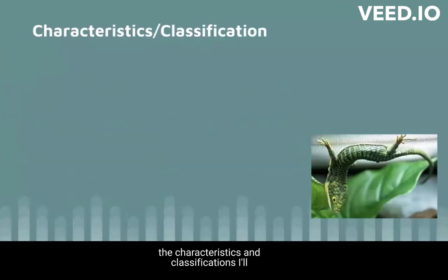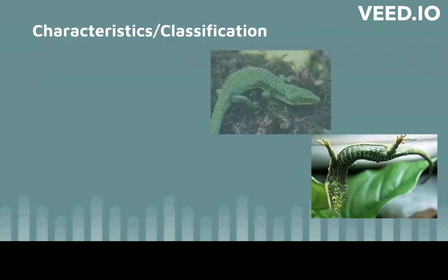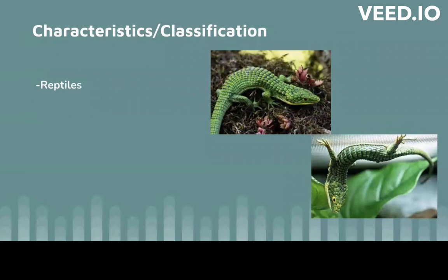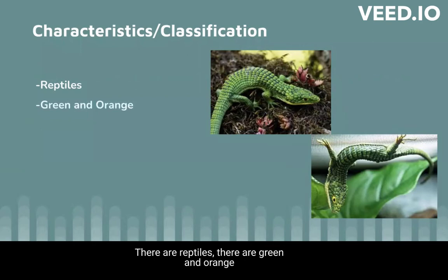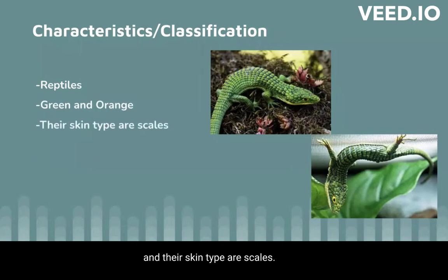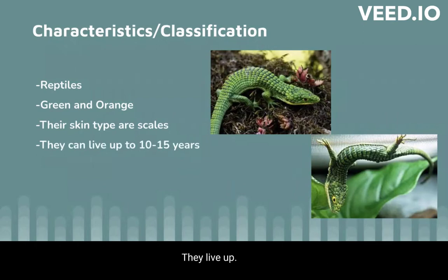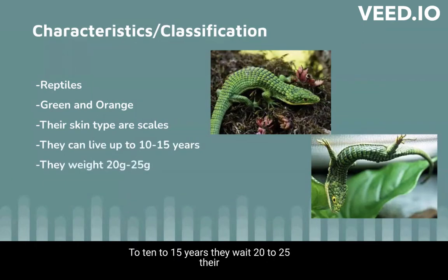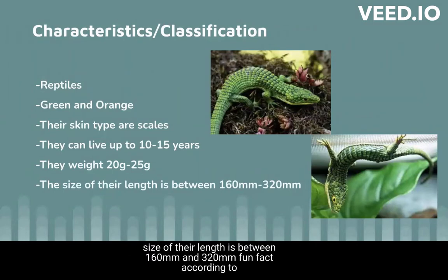The characteristics and classification — passing to Mary Pasquale. They are reptiles and their skin type are scales. They live up to 10 to 15 years. They weigh 20 to 25. Their size in length is between 160 millimeters and 320 millimeters.